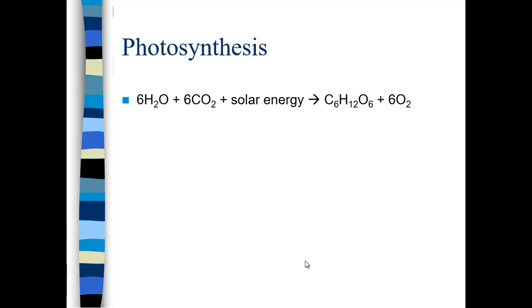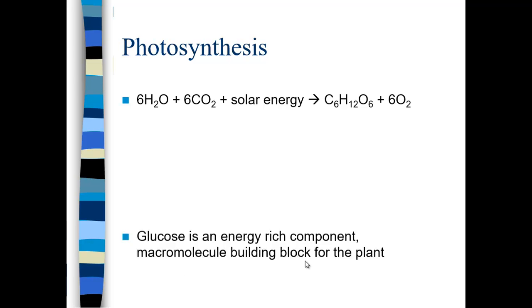That makes C6H12O6 — the chemical formula for glucose — and then six oxygens. Glucose is the backbone for all carbohydrate chemistry in the cell. It's an energy-rich component and a building block for all the different macromolecules: proteins, lipids, carbohydrates, and nucleic acids in the plant.